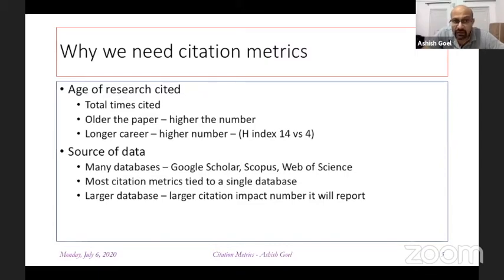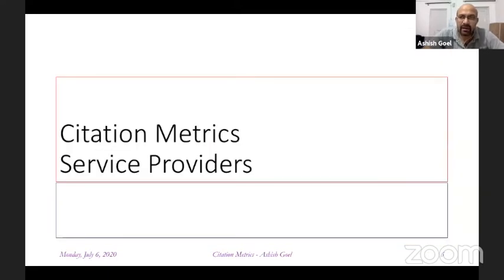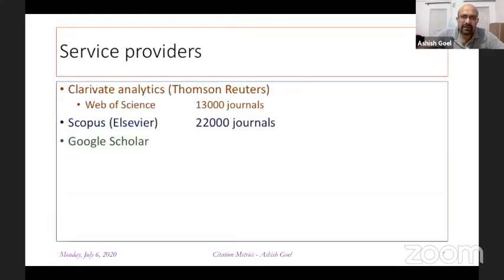There are many different sources of data and citation metrics, each tied to a single database. There are three main service providers: first, Clarivate Analytics, which recently acquired Thomson Reuters and maintains the Web of Science database, covering 13,000 journals.